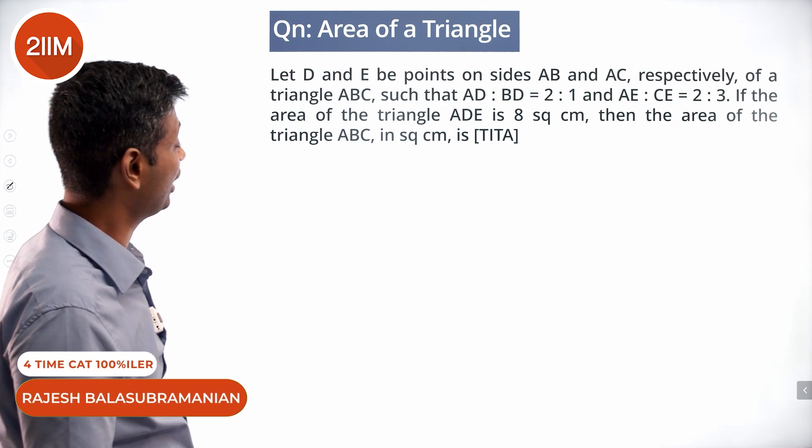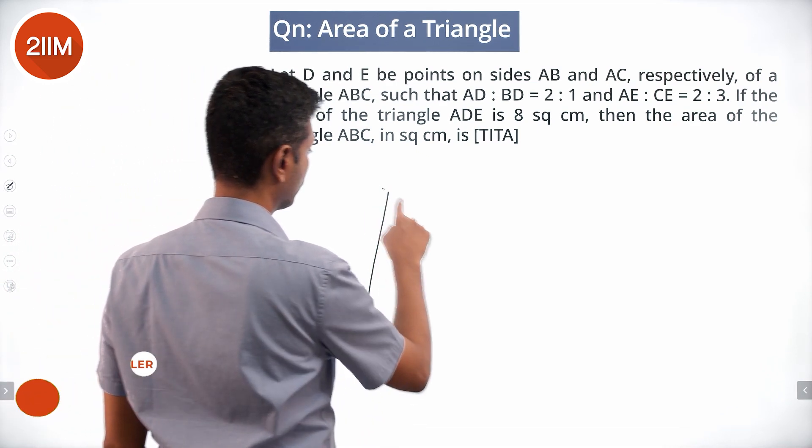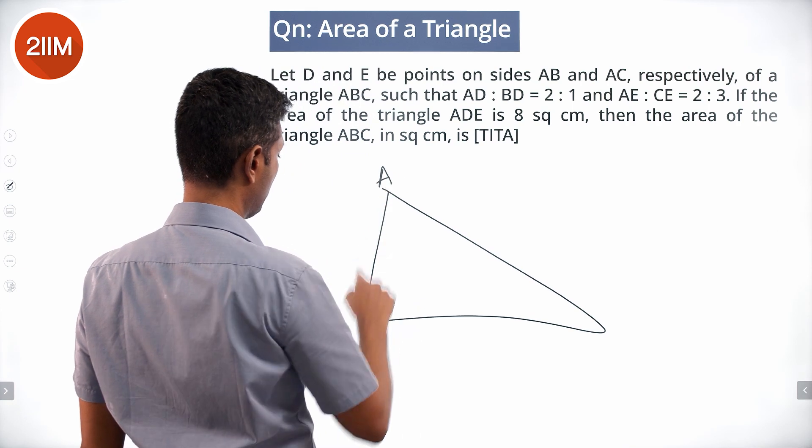Let D and E be points on sides AB and AC respectively of a triangle ABC, such that AD is to BD is 2 is to 1, which is 2x and x, and AE is to CE is 2 is to 3.